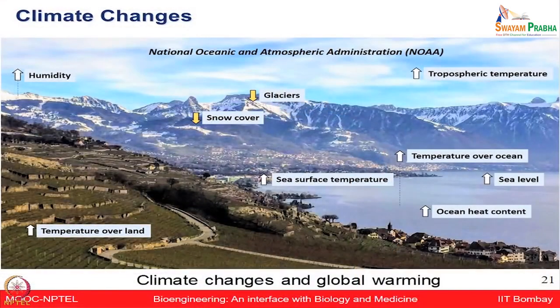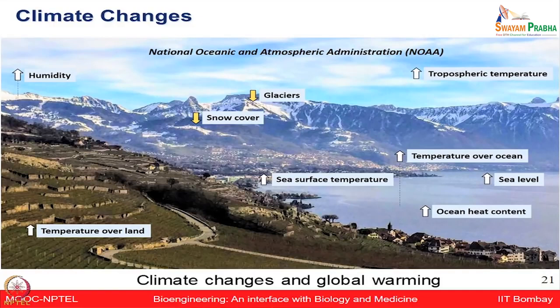Let us move on to another major issue: climate change and global warming. The entire environment and climate is getting changed, and we are seeing many global issues now — untimely rain, very high temperatures. Following the image on global warming: humidity is increasing, temperature over land is increasing, tropospheric temperature is also increasing, temperature over ocean is increasing, and ocean heat content is increasing. As a result, glaciers and snow cover are melting and sea levels are rising. These overall climate changes are going to affect us tremendously, and biologists and engineers — especially bioengineers — need to work together to address these global problems.